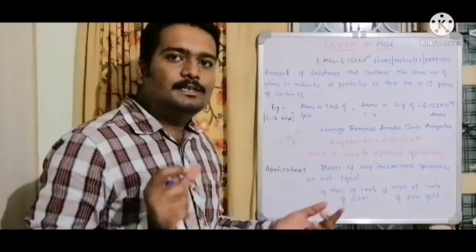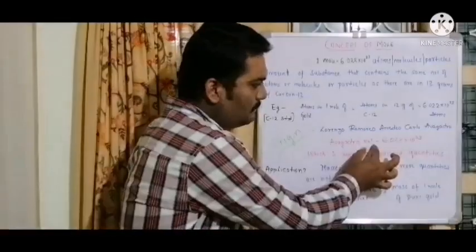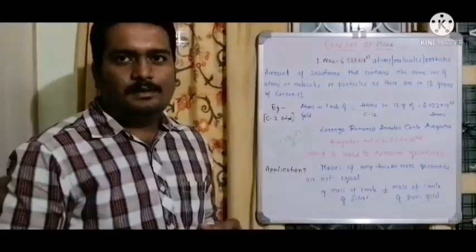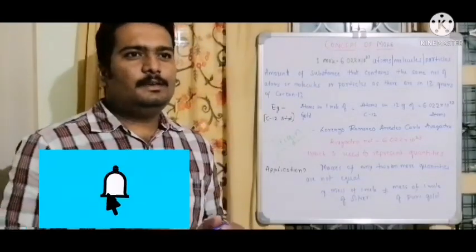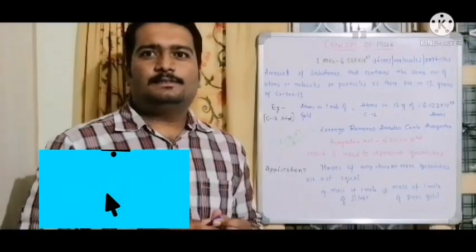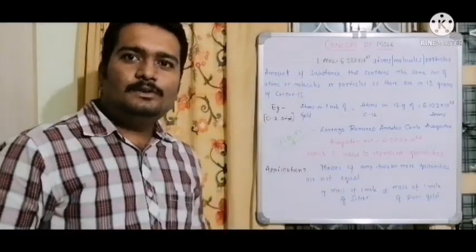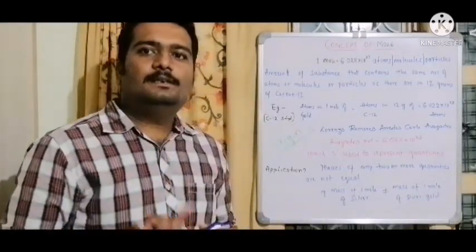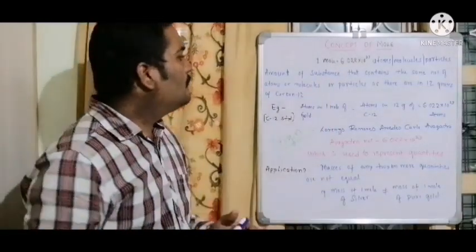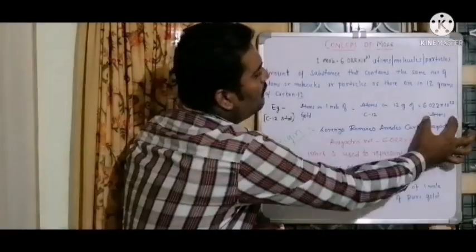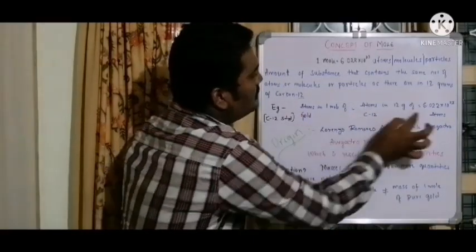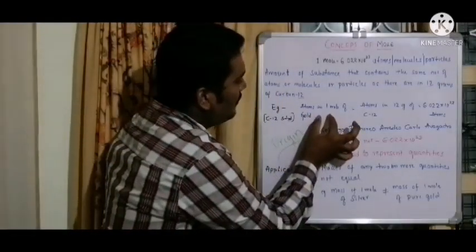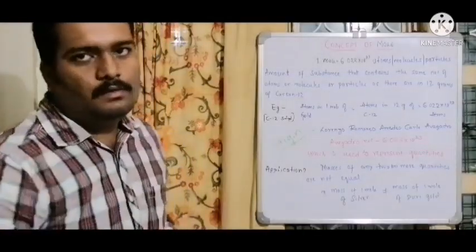Avogadro is the scientist who introduced this number, hence it is called Avogadro's number, equal to 6.022 into 10 to the power of 23. After its introduction, it needed an application. Avogadro's number is used to represent quantities. For example, to measure atoms in one mole of gold, we use Avogadro's number — atoms in one mole of gold equals 6.022 into 10 to the power of 23 atoms.